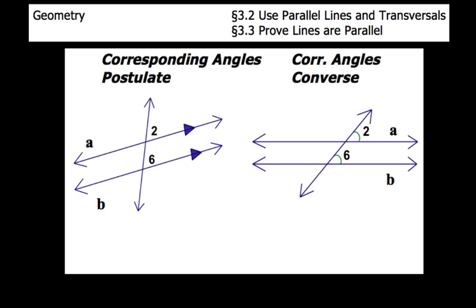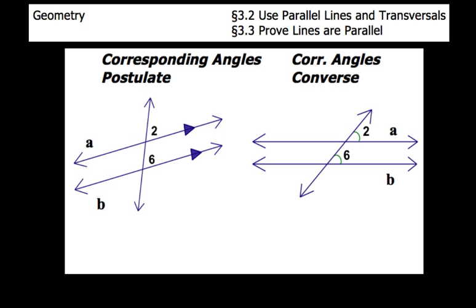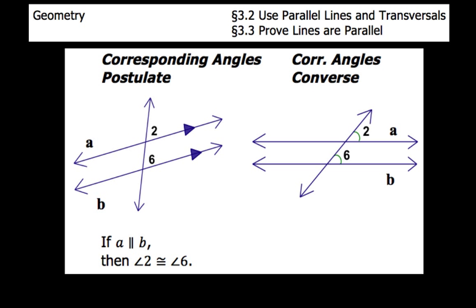The first one we're going to take a look at is the corresponding angles postulate and the corresponding angles converse. Notice in both diagrams we've got angles 2 and 6, but there's something slightly different about each diagram. In the corresponding angles postulate, notice the two little triangles on lines A and B — if we see that, we can assume those two lines are parallel. Whereas in the diagram for the corresponding angles converse, the only thing we know is that angles 2 and 6 are marked as congruent. If line A is parallel to line B, then angle 2 is congruent to angle 6.